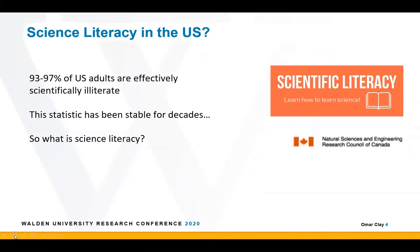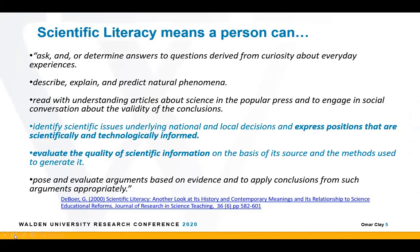Unfortunately, a sobering statistic: 93 to 97% of American adults are considered effectively scientifically illiterate, and this has been stable for decades. Science literacy consists of some understanding of scientific findings and conclusions, but in particular it focuses on understanding scientific process and how to critically evaluate information. I want to focus on two things: first, civic science literacy — that literacy related to scientific issues relevant to contemporary affairs and governance on international, national, and local levels.